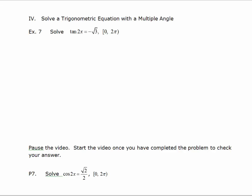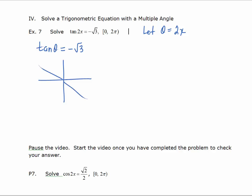Next we'll look at solving trigonometric equations with a multiple angle — in this case a double angle. The first thing we want to do is make a substitution and solve as if it were a single angle first. We'll let theta represent 2x and solve the tangent of theta equals negative square root of 3. Tangent is negative in the second and fourth quadrants, and the reference angle whose tangent is the square root of 3 is pi over 3. So the solutions are 2 pi over 3 and 5 pi over 3.